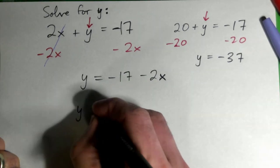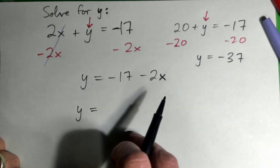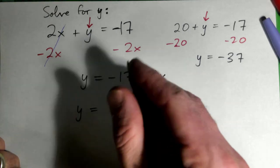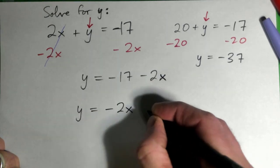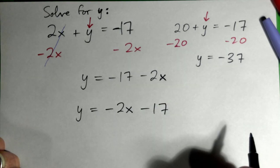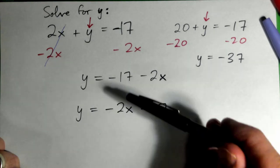Or, how else could we write that, by the way? There's actually two ways. Yeah, you can do negative 2x minus 17, so that's the other way, okay? So this way or this way, right?